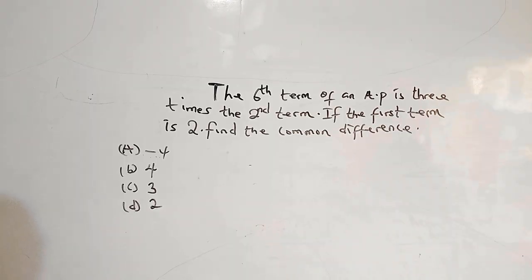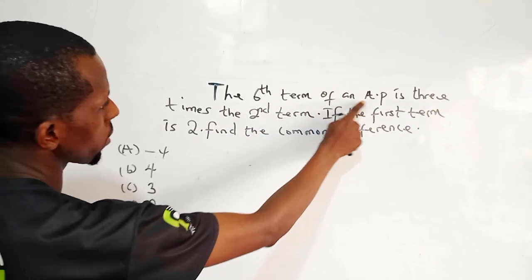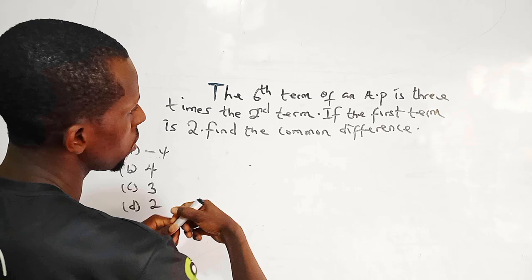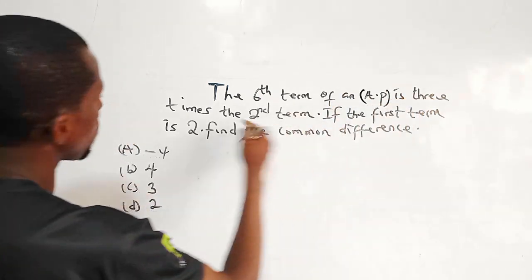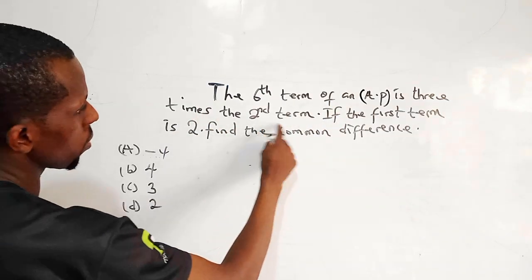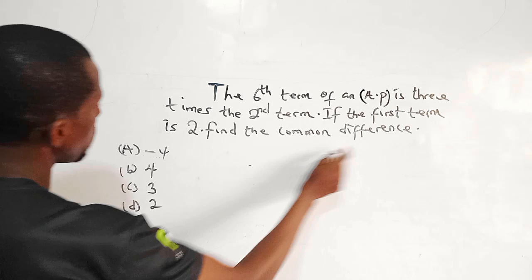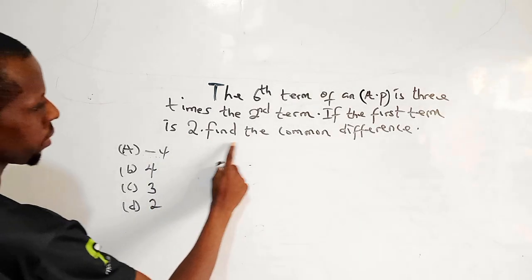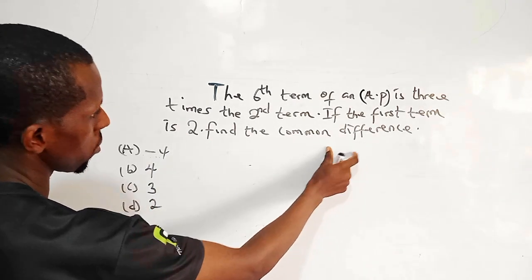The question says, the sixth term of an arithmetic progression (AP) is 3 times the second term. If the first term is 2, find the common difference.